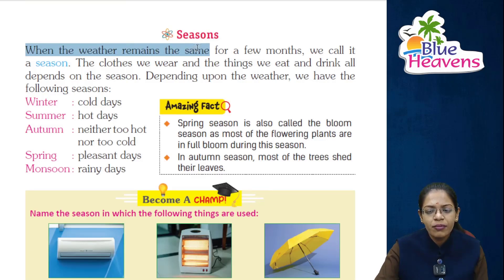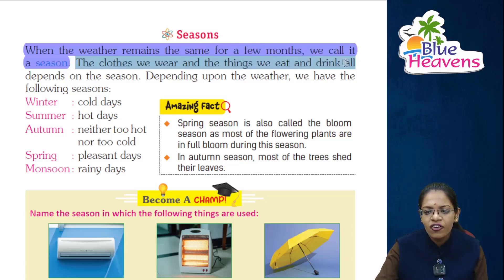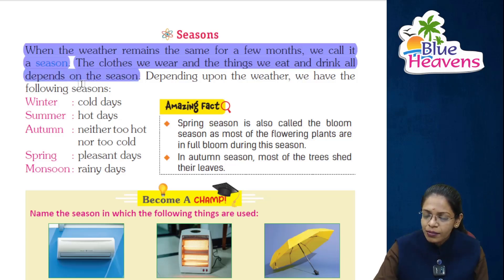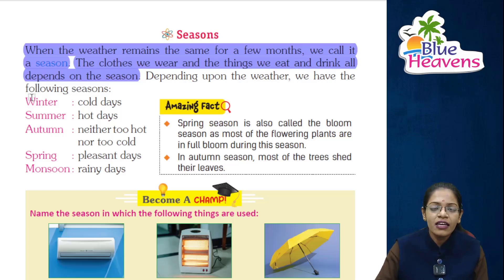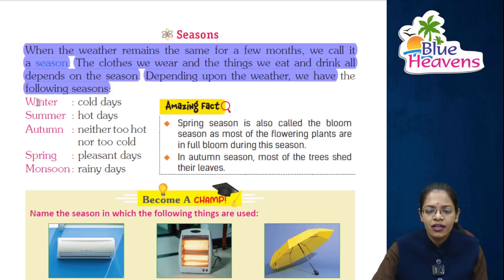When the weather remains the same for a few months, we call it a season. The clothes we wear and the things we eat and drink all depend on the season. Depending upon the weather, we have the following seasons. Now let's start with winter season.